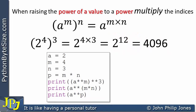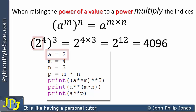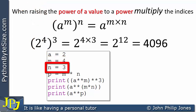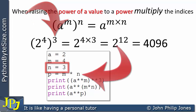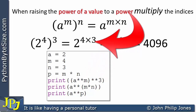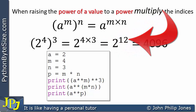Let's now consider the following Python program. You can see here a is assigned 2 to reflect the base of the number shown, m is assigned 4 to reflect this index, and n is assigned 3 to reflect this index. On this line, I am multiplying together m and n to reflect this multiplication, which gives us the value of 12.